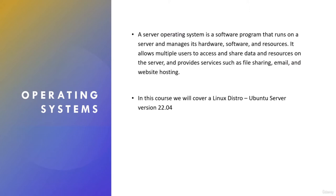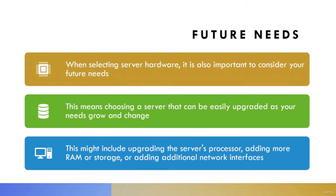A server operating system allows multiple users to access and share data and resources, and it provides services like file sharing, email, website hosting, and many more. In this course we're going to be covering the Linux distro Ubuntu Server, specifically version 22.04. When selecting server hardware, it's important to consider future needs — choosing a server that can be upgraded as your needs grow, including upgrading the processor, adding more RAM, more storage, or additional network interfaces.